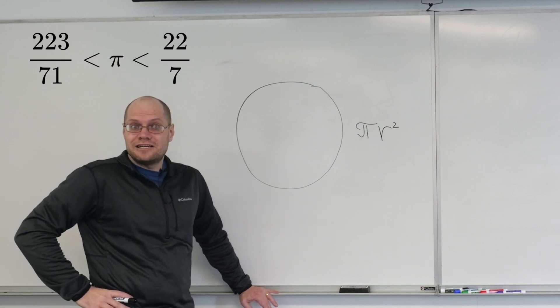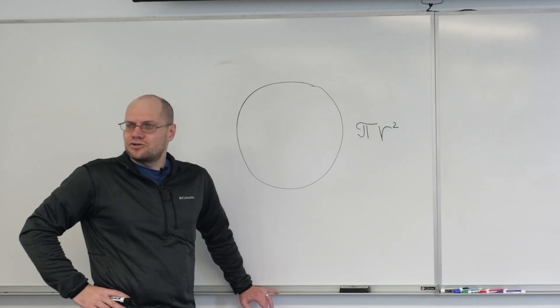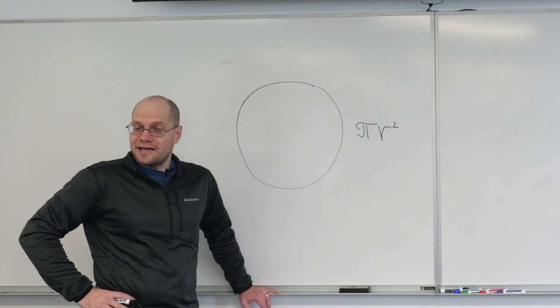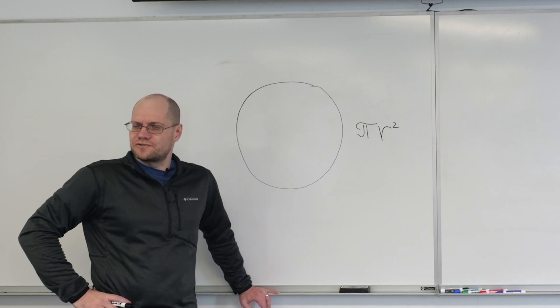But that doesn't help you understand what π is. That's just an estimate. We still don't know what π really is. Is it a number like three halves or 22/7? Or is it not a number, like square root of two?